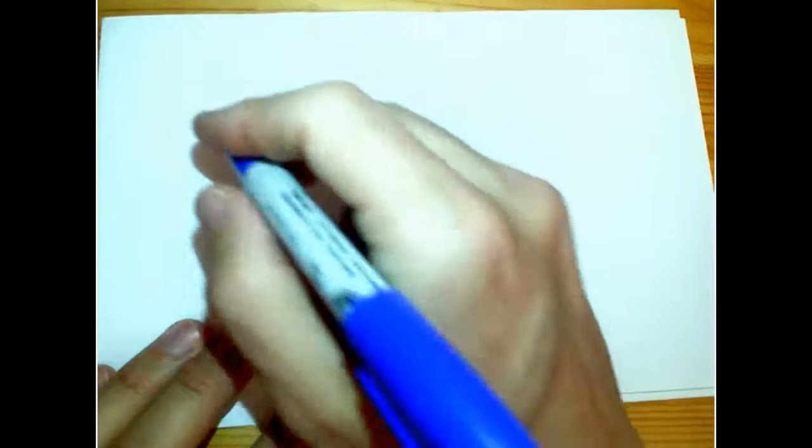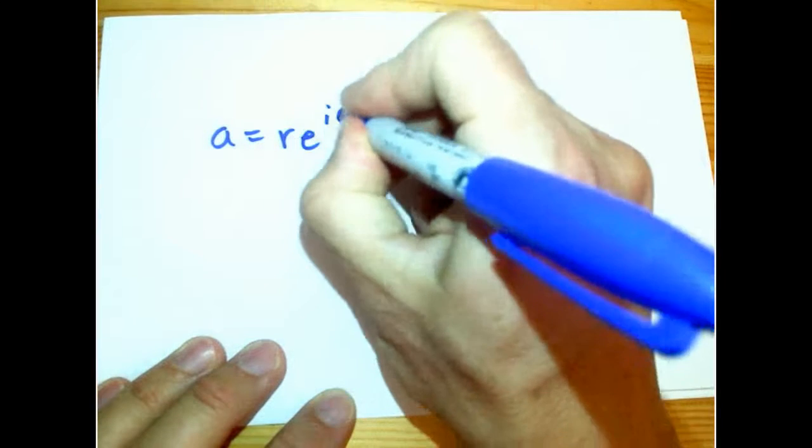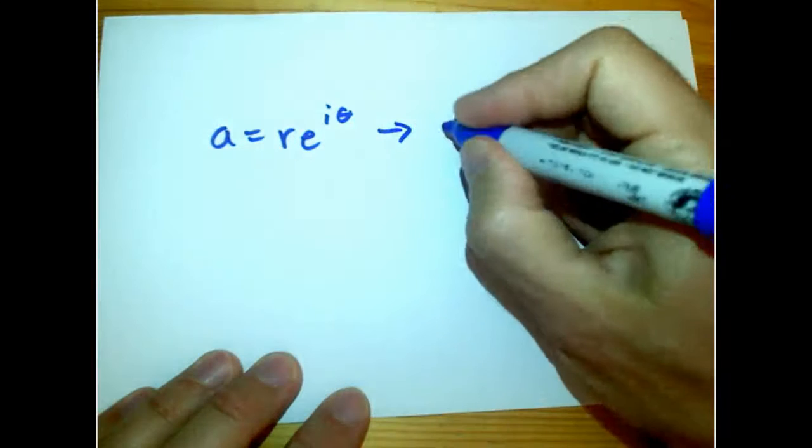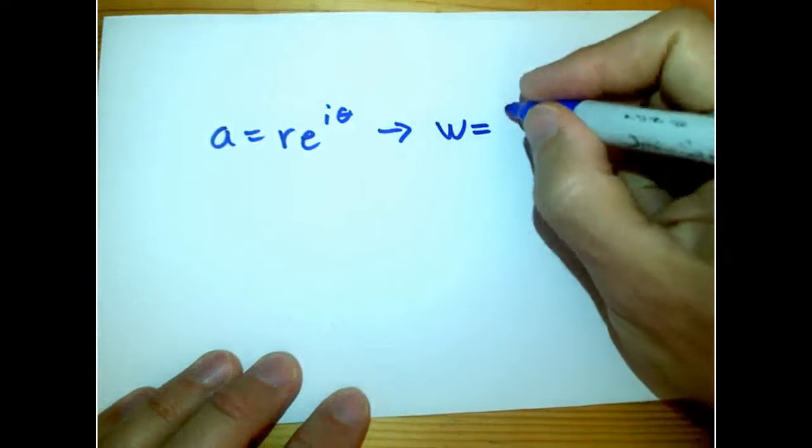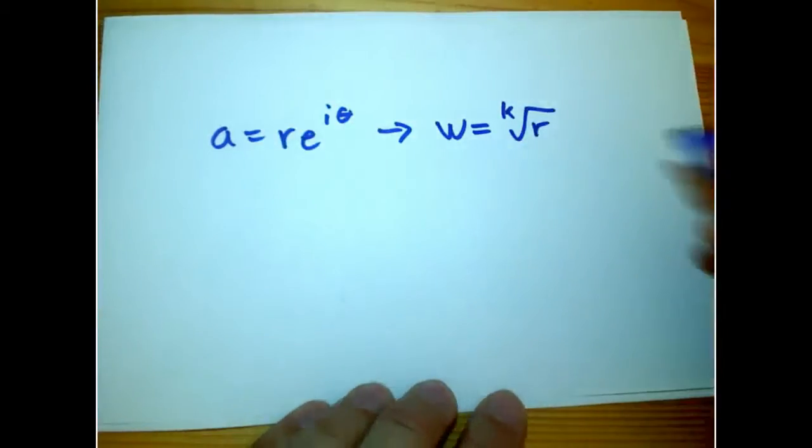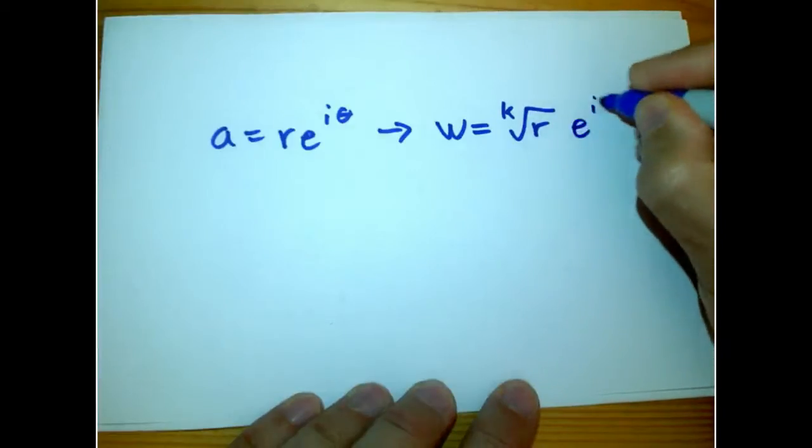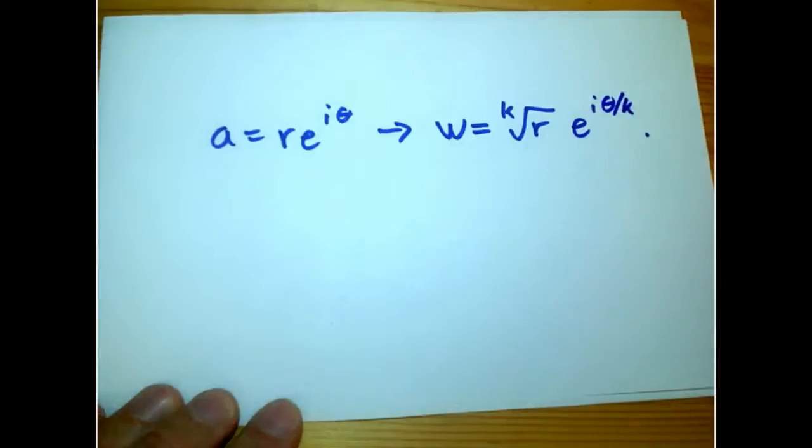If we give ourselves a little bit of knowledge about complex numbers, this is very easy. If a is r*e^(iθ), then we just let w equals the ordinary real k-th root of the non-negative real number r, times e^(iθ/k). And we're good.